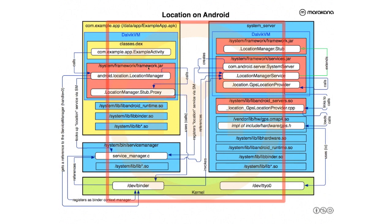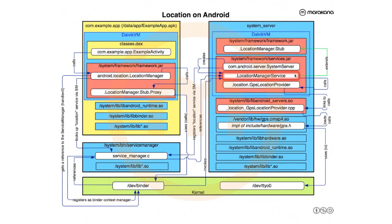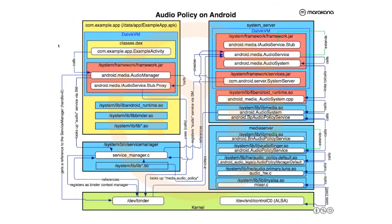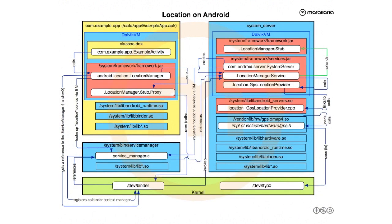One interesting thing about location — also true for sensors — is that it works in both directions. If you subscribe to receive location updates, you pass a reference to a listener all the way over to the LocationManagerService. The manager service can then use that listener to post updates it receives from GPS. The Binder call goes the other way — the update is executed inside the activity's onLocationChanged callback by a Binder thread inside the client app. Communication is bidirectional and asynchronous.